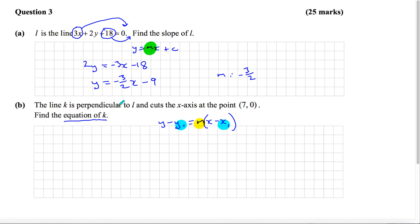It tells us that k is perpendicular to L. There's a fact about perpendicular lines you should know: the slope of line L is minus 3 over 2, and the slope of k, if they're perpendicular, you flip the slope and change the sign, so it becomes positive 2 over 3.